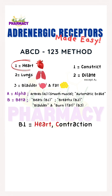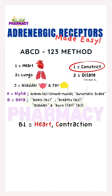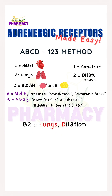Beta-1 — we think 1 heart. It works primarily in the heart to increase heart rate and force of contraction. A drug example here is dobutamine, which stimulates beta-1 for acute heart failure or cardiogenic shock to improve heart performance. There are also drugs that inhibit or block the action of beta-1 receptors — we call them beta blockers — which lower heart rate and blood pressure in hypertension.